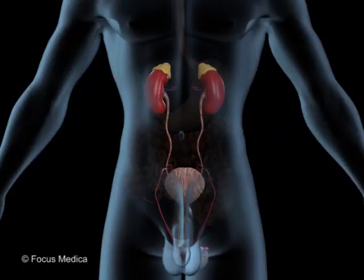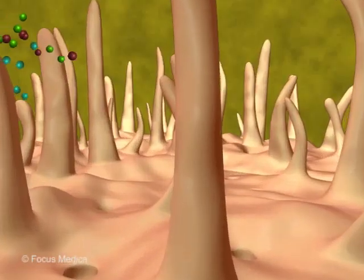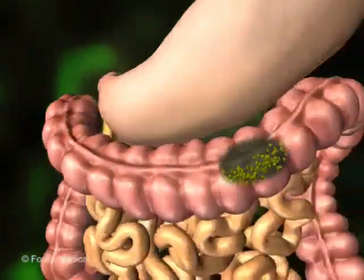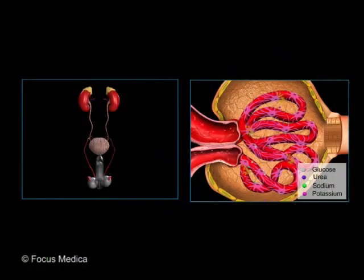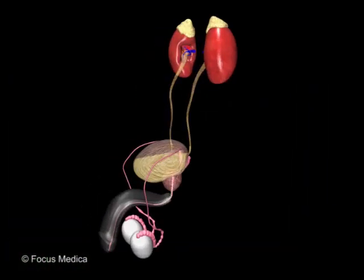The digestive system and excretory system work together. The digestive system breaks down the food into nutrients which are absorbed into the blood stream and the undigested solids are eliminated by the digestive system while the excretory system filters the blood stream and removes the waste products and excess water.